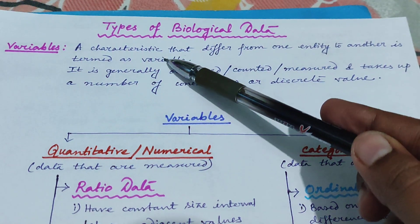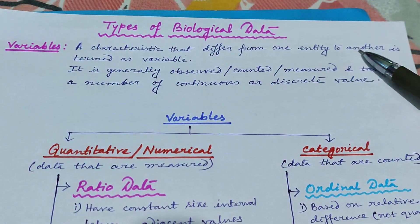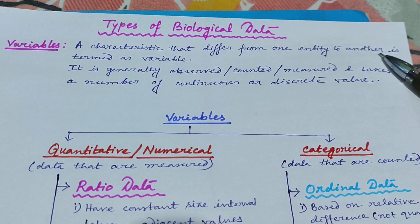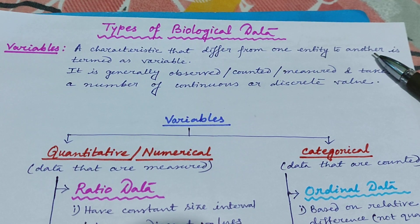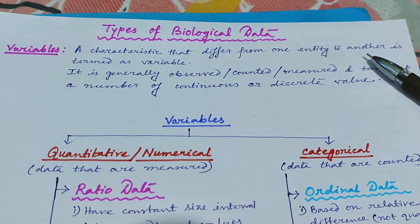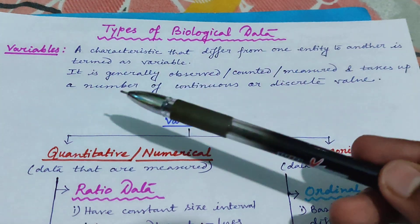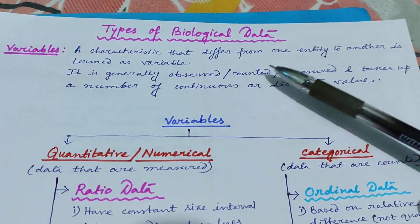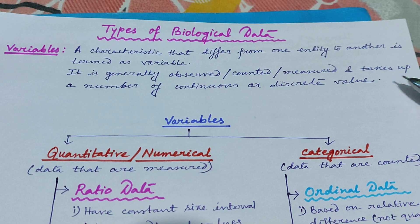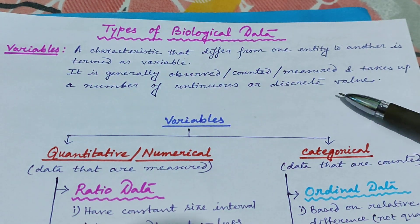A variable is a characteristic that differs from one entity to another — like weight, height, or length. These are all variables which differ from one entity to another. It is generally observed, counted, or measured, and takes up a number of continuous or discrete values.